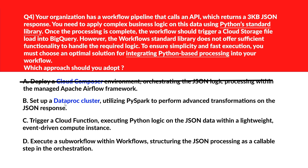Option B says set up a Dataproc cluster. Dataproc is optimized for large-scale distributed data processing and is not suitable for a small JSON file — incorrect. Option C says trigger a Cloud Function. Cloud Functions offer a simple and fast execution environment for Python-based processing without infrastructure overhead — we'll keep this.